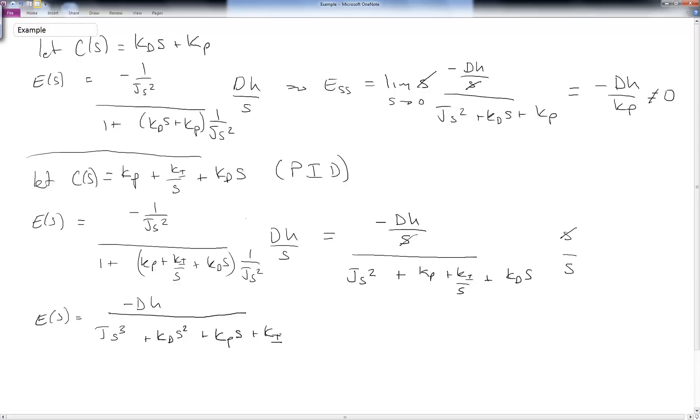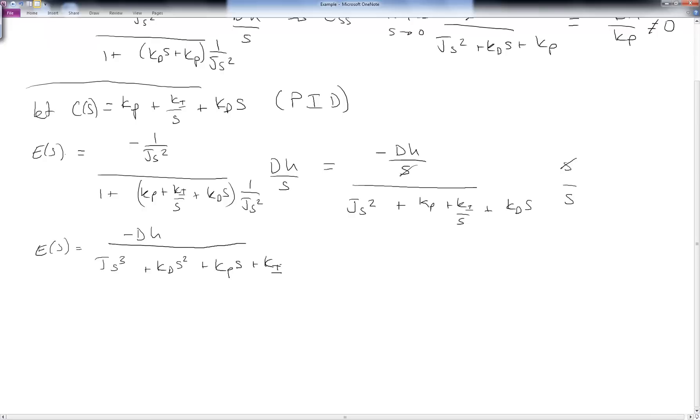Notice we fundamentally changed this error transfer function. Before, we had a one over s in the numerator, or you could think of it as a pure integrator. Here now, we've gotten rid of that term. So to make sure that the system is actually stable and that we can apply the final value theorem, we'll go ahead and use Routh Hurwitz.